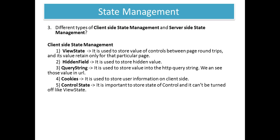Hidden field is used to store hidden values. Most of the time it is used for an ID field because we don't want to show the ID field to the user. Query string is used to store values in the HTTP query string and we can see those values in the URL. Query strings are an easy way to pass information from one page to another, such as passing a product number from one page to another where it will be processed.